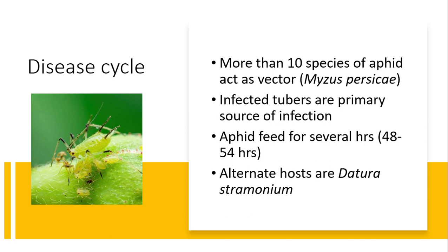Regarding the disease cycle, the vector for this disease is the aphid. There are more than 10 species of aphid that act as vectors, and Myzus persicae is the most important. Infected tubers are a primary source of infection. Aphids feed for 48 to 54 hours, and the alternate host is Datura.